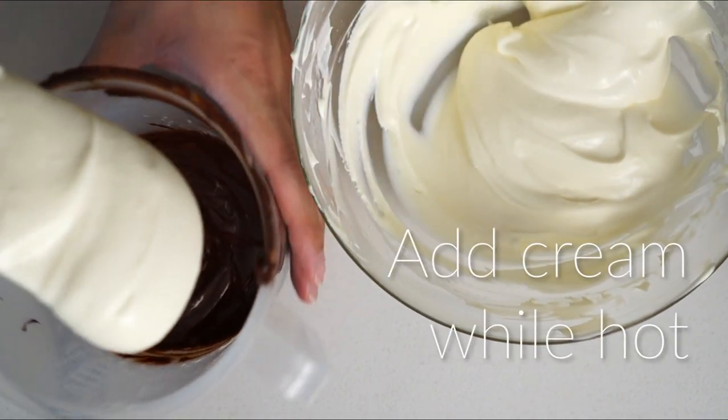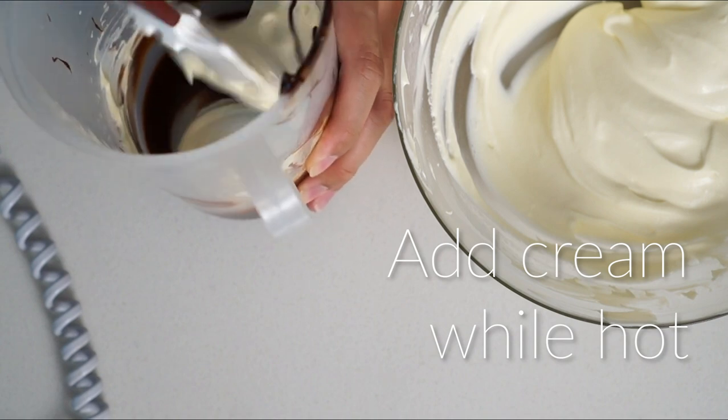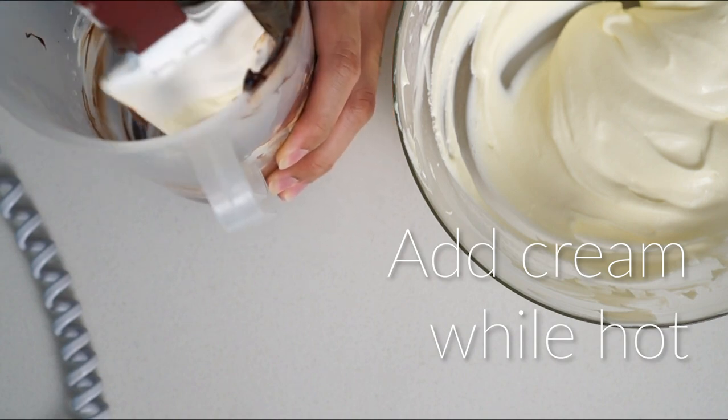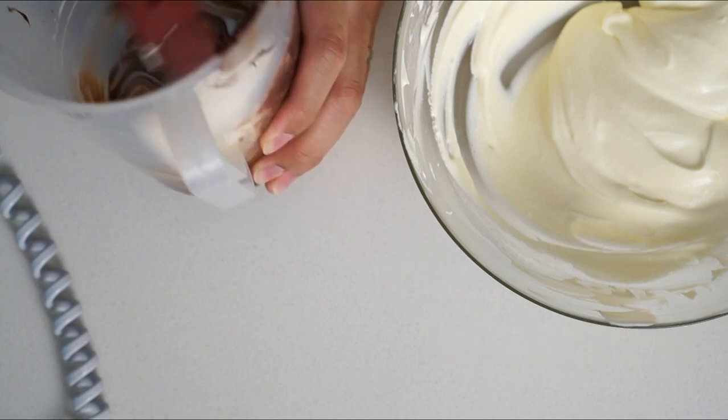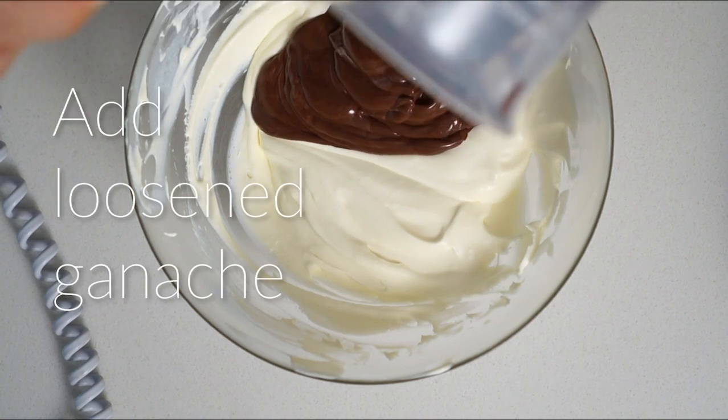As soon as you make your ganache, we want to incorporate some of the cream. If you wait too long, the ganache will get too cold and will start to crystallize when you start whisking the cream. This will lead to a grainy mousse. Take part of the cream and mix it into the ganache to loosen the mixture, then pour that into the whipped cream.